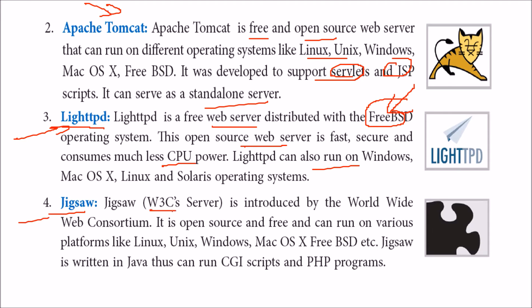Then we have Jigsaw, which is the World Wide Web Consortium server introduced by the W3C — the consortium that deals with web content. It is open source, free, and can run on various operating systems. It is written in Java and can run CGI scripts and PHP programs.